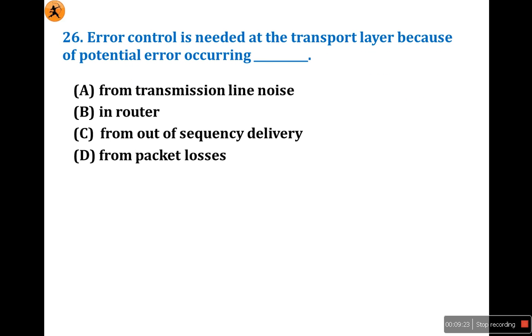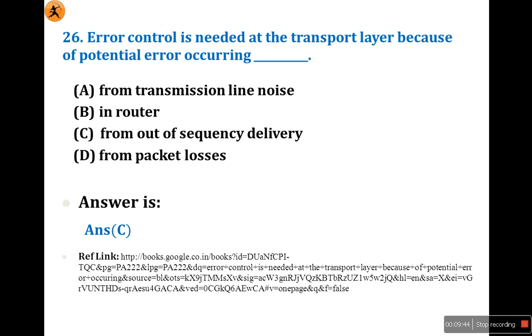Question 26: Error control is needed at the transport layer because of potential errors occurring from out of sequence delivery. Before looking at the options, you should have the perfect option, which is C: Sequence delivery. For this question, there's a famous book. Go through this link. You will get all previous year questions with solutions in Google Book. Straightforward question, no need for explanation.